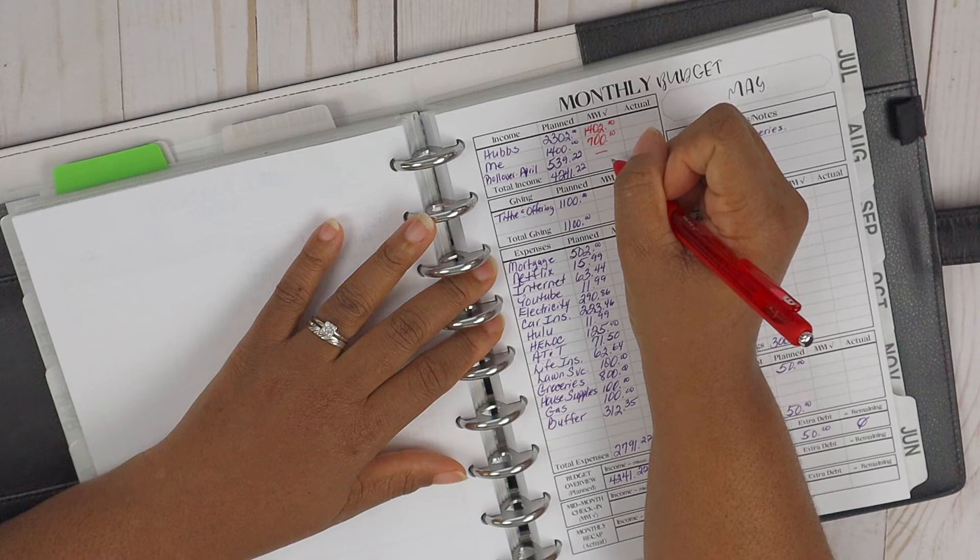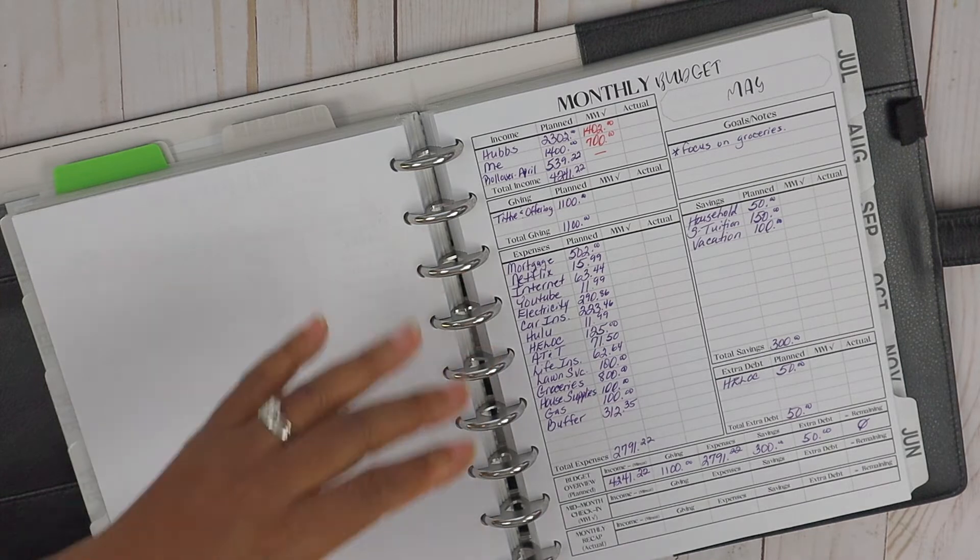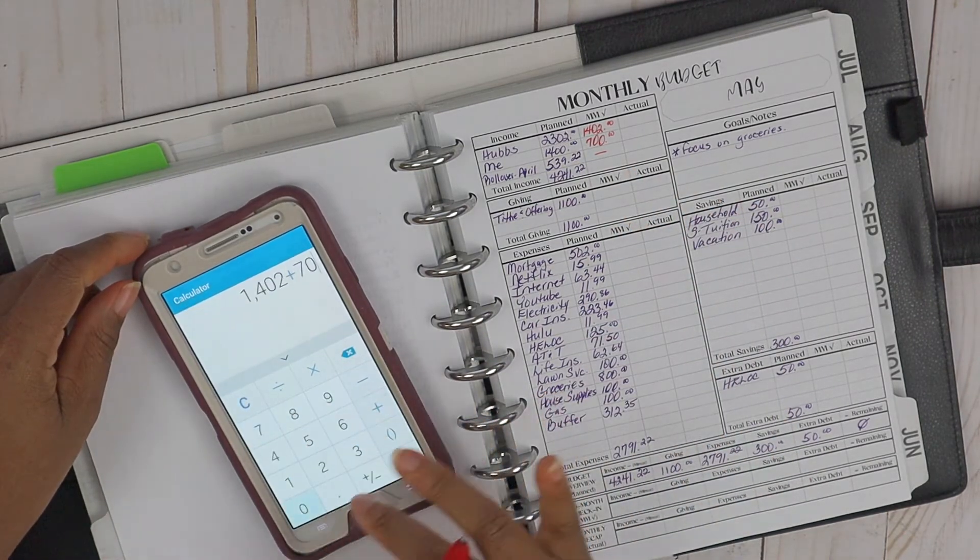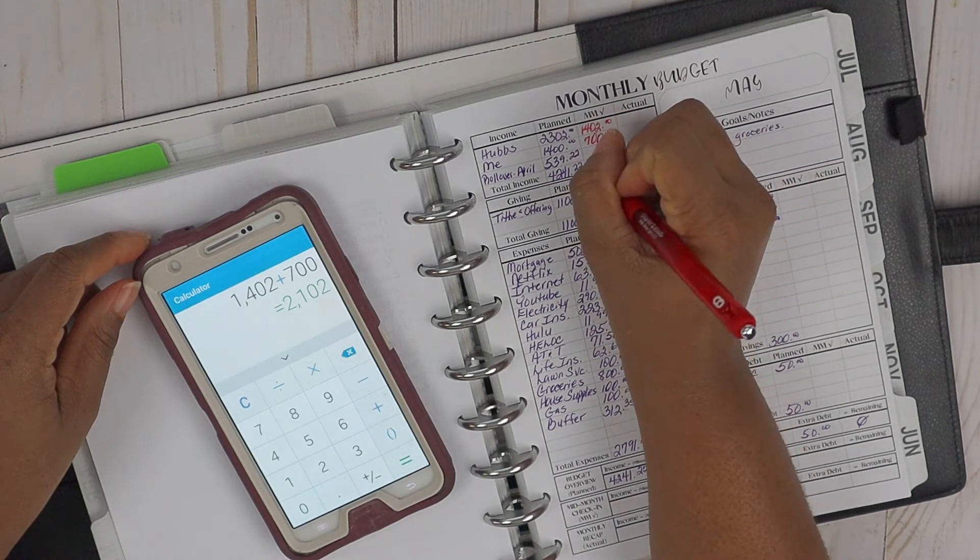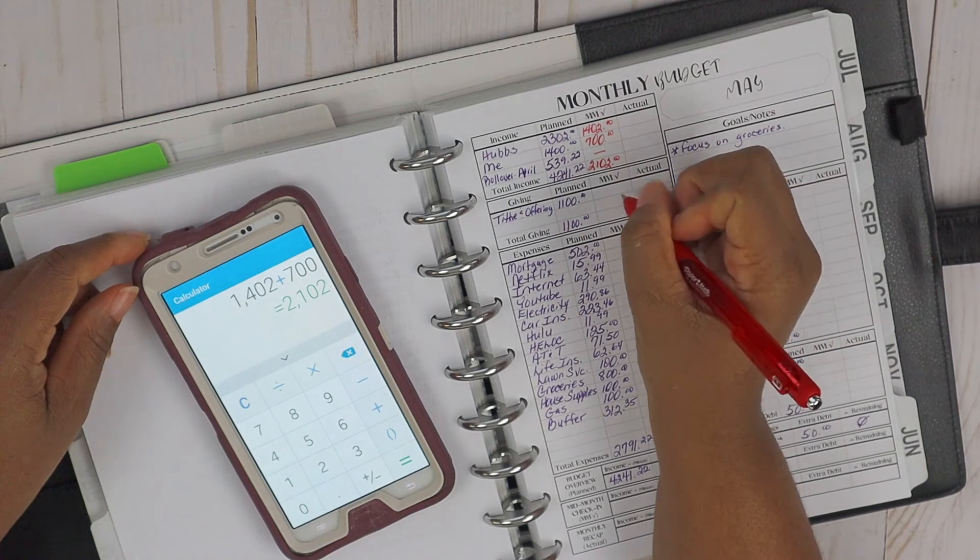Now for our April rollover, that is part of our paycheck budget number two, so we are not accounting for that in the mid-month check. So we can go ahead and total $1,402 plus $700. Thus far we're at $2,102 received in this account.